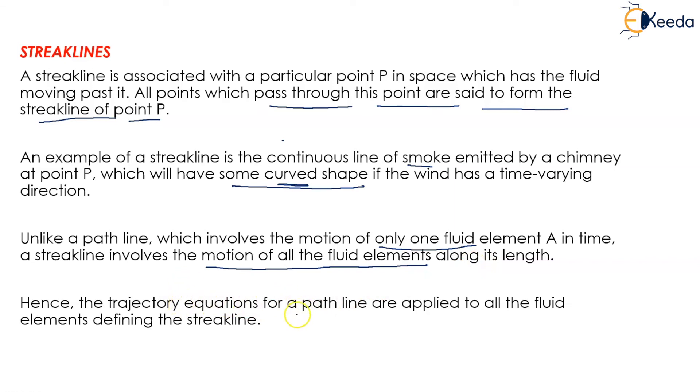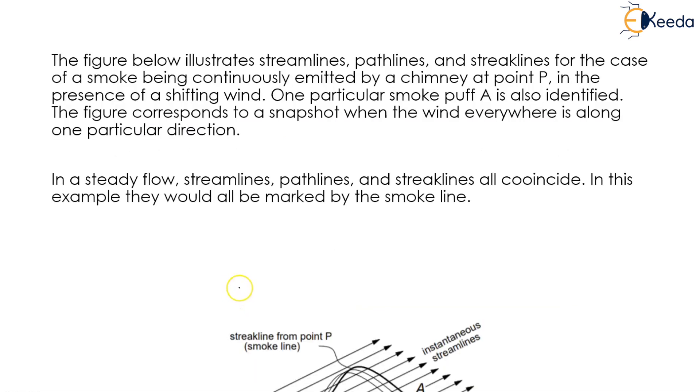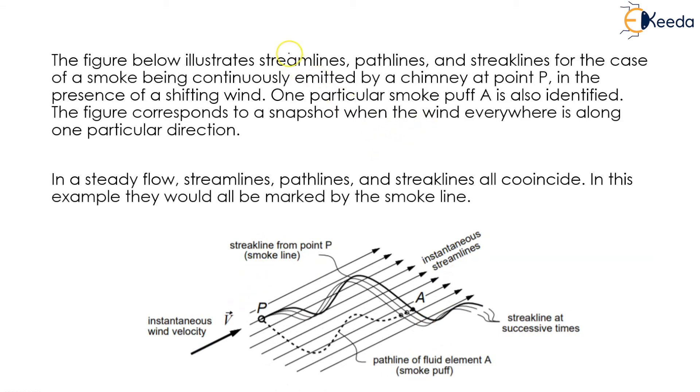Hence, the trajectory equations for pathlines are applied to all the fluid elements defining the streakline. The figure below illustrates all three: streamline, pathline, and streakline. For the case of smoke being continuously emitted by a chimney at point p in the presence of a shifting wind, one particular smoke puff A is also identified. We will be learning from this figure when the wind is everywhere along one particular direction.